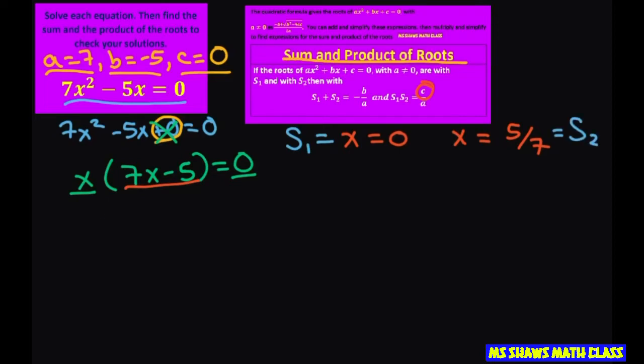So let's add our solutions up. Solution 1 plus solution 2 equals 0 plus 5 sevenths, which equals 5 sevenths.